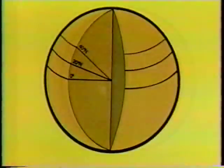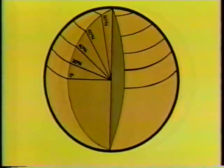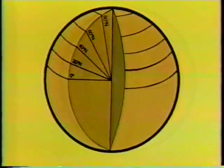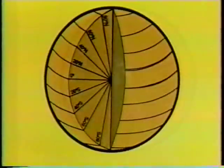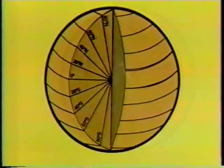40 degrees north. 60 degrees north. 80. 90 — we're at the North Pole. We number latitude in the same way south to the South Pole. Don't forget to put in the capital S or N, standing for south or north latitude.